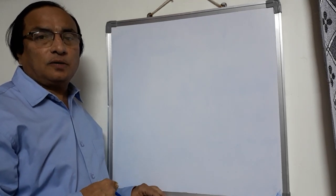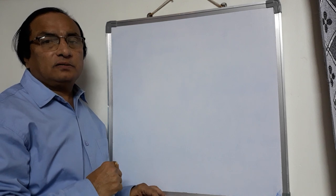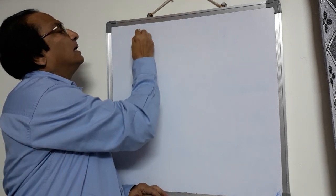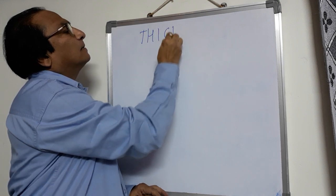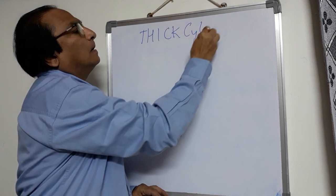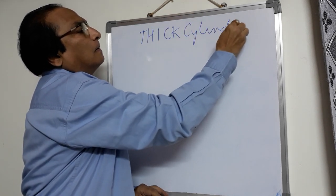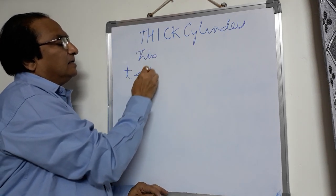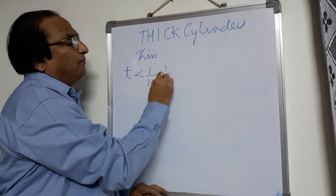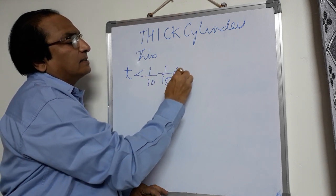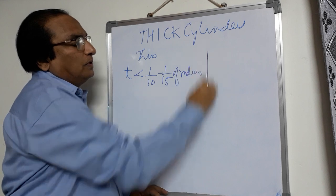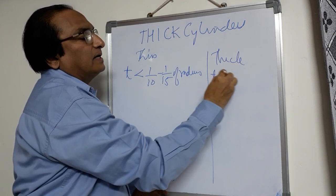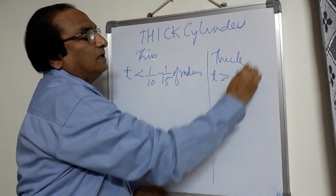Hello friends, this is BK Kolapoday. Earlier we had seen what are thin cylinders. Today we will go further for what we will see as thick cylinders. We have seen that in case of thin cylinder, the thickness is less than 1/10 to 1/15th of radius. So when you go to thick, thickness will be definitely greater than 1/10 of the radius.